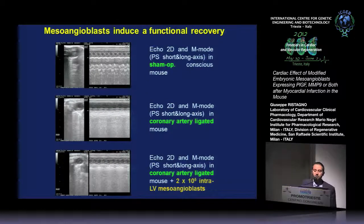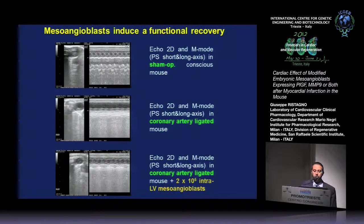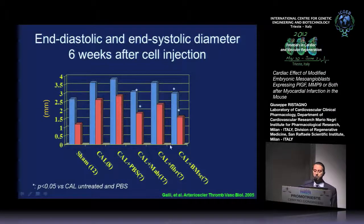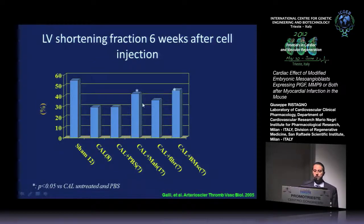In the previous study performed several years ago, we injected mesangioblasts in infarcted mice and then followed the myocardial function six weeks after the injury. Here you can see some images from 2D echo. The first image shows normal sham-operated mice with good wall function. The second shows a coronary artery ligated mouse with impairment in wall motion and increases in end-diastolic and systolic diameter. Instead, we have an important recovery of myocardial function in mice injected with mesangioblasts, which reduced heart dilation and improved left ventricular shortening fraction.